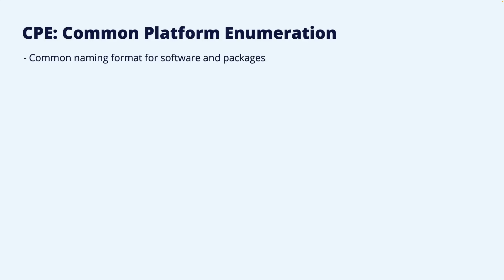We start with the CPE, which is short for Common Platform Enumeration. It is a standardized naming format for identifying a specific piece of software, package, or operating system, but it is also applied to hardware components. The CPE is what NVD uses to describe the software that is affected by a vulnerability. Similar to the CVE identifier for a vulnerability, the CPE identifier can be used to uniquely identify a specific software or hardware in a highly granular way. The CPE specification is hosted and maintained by NIST, just like NVD.